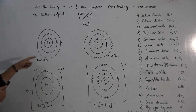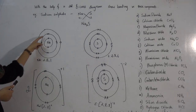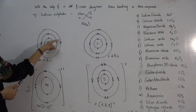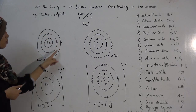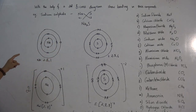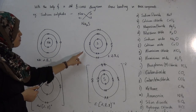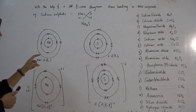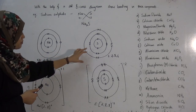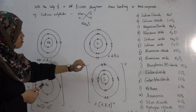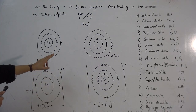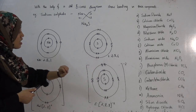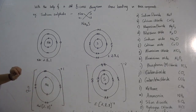You already know the electronic configuration of sodium: the first shell has two electrons, the second shell has eight electrons, and the last shell has one electron. Sodium bonds with sulfur. Sulfur is a non-metal, and it has two electrons in its first shell, eight electrons in its second shell, and six electrons in its third shell.